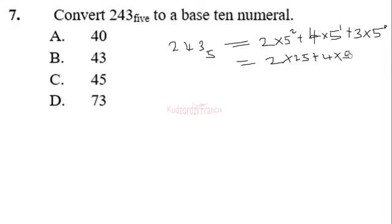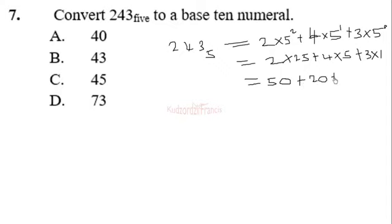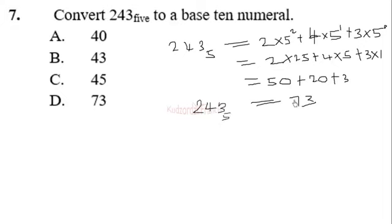Simplifying: 2 × 25 = 50; 4 × 5 = 20; and 3 × 1 = 3 (since any non-zero number raised to the power 0 equals 1). Adding them: 50 + 20 + 3 = 73. So 243 base 5 equals 73 base 10, which is option D.